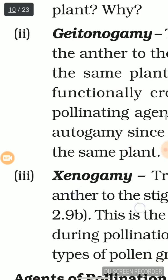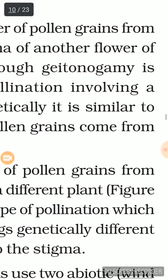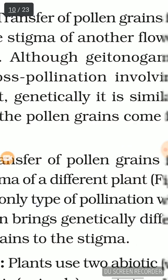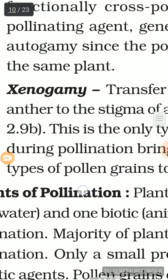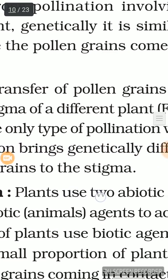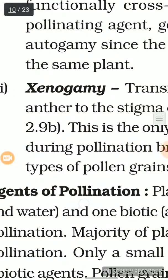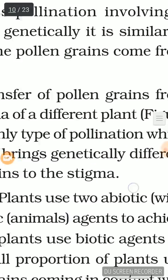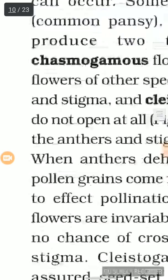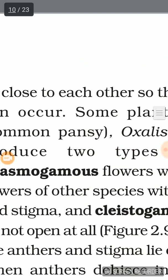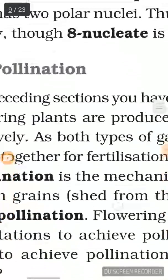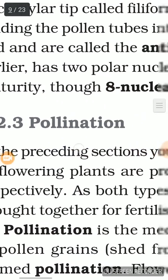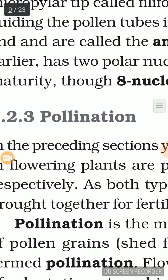Now let's go to the third type: xenogamy. This is the transfer of pollen grains from the anther to the stigma of a different plant. This is the only type of pollination which brings genetically different types of pollen grains to the stigma. Pollination means the transfer of pollen grains from anther to stigma.